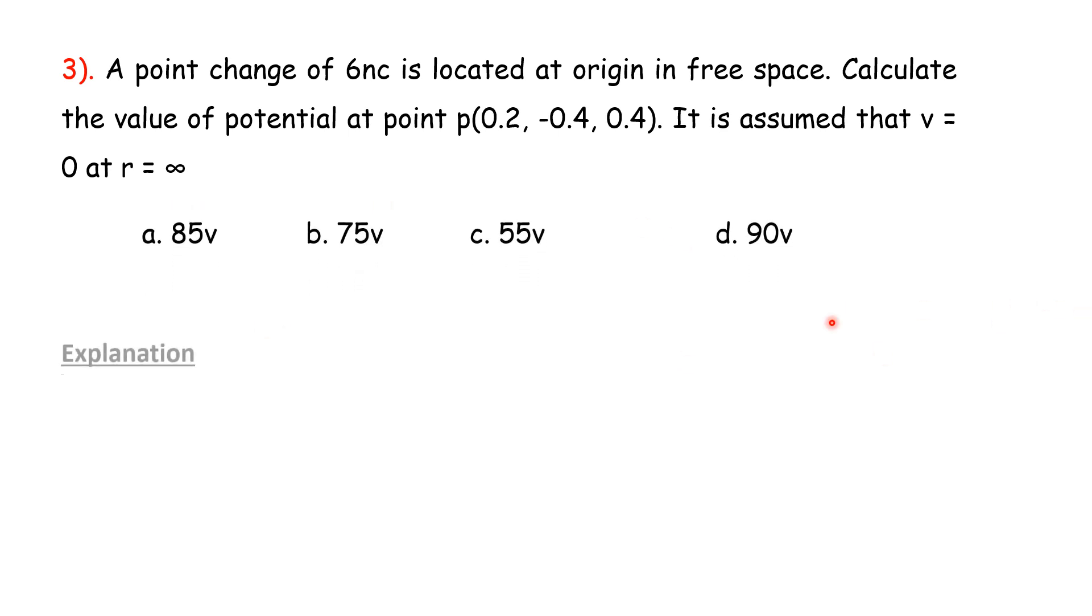It is assumed that V equals 0 at R equals infinity. V of E equals 6C into 10 to the power minus 9 into 10, 9 into 10 power 9, divided by 0.6.